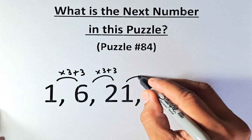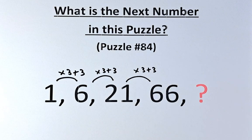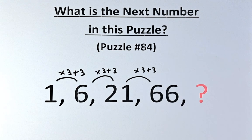From 21 to 66, we multiply by 3 and plus 3. So 21 times 3 is 63, and 63 plus 3 will give us 66.